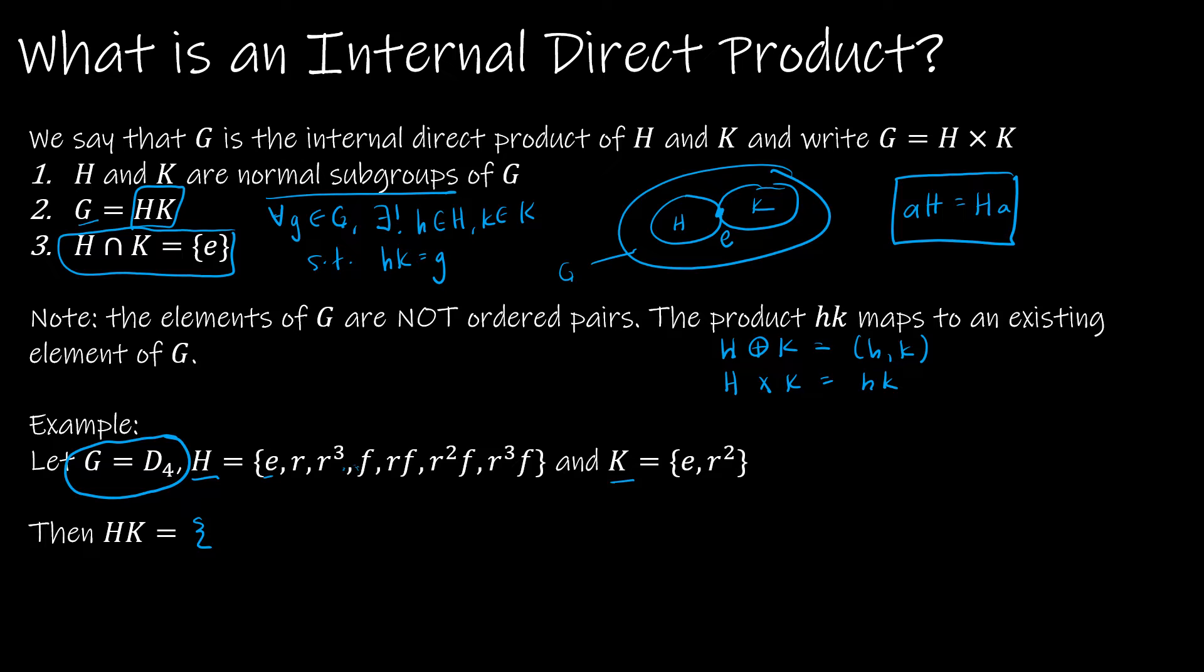E, which is an element of H times K, would give me e and then r². And then if I took r times e, that would give me r, and r times r² would give me r³. And then r³ times e would give me r³. R³ times r² would give me r. And then I would continue that. So now I'm at r³, that generates things I already have in my set.